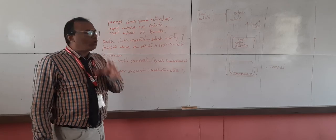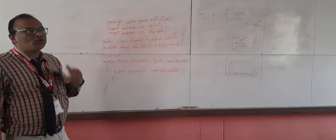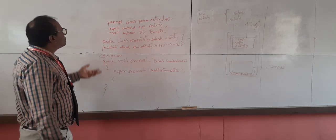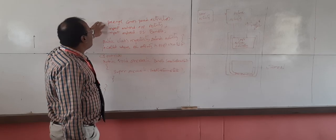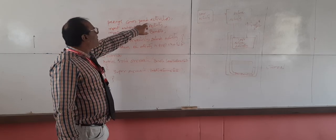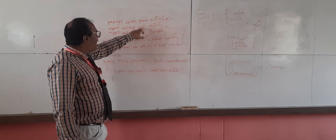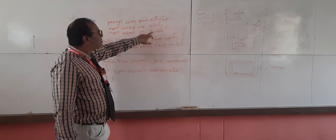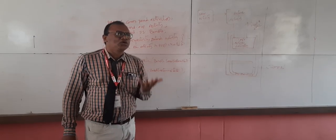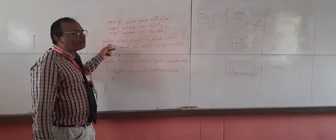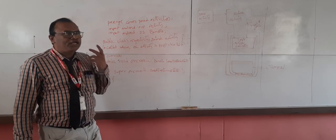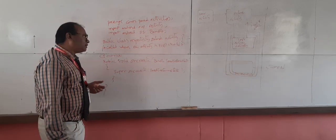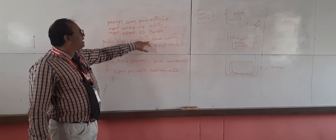When we want to create an activity, we first need to write the code. Here is a sample. The first line is the package: com.pand.activitys. Then we import app.activity and android.os.Bundle. Bundle contains all the services related to Android applications. Then we write a public class MyActivity which extends Activity — this is the main line we need to incorporate to create our activity.